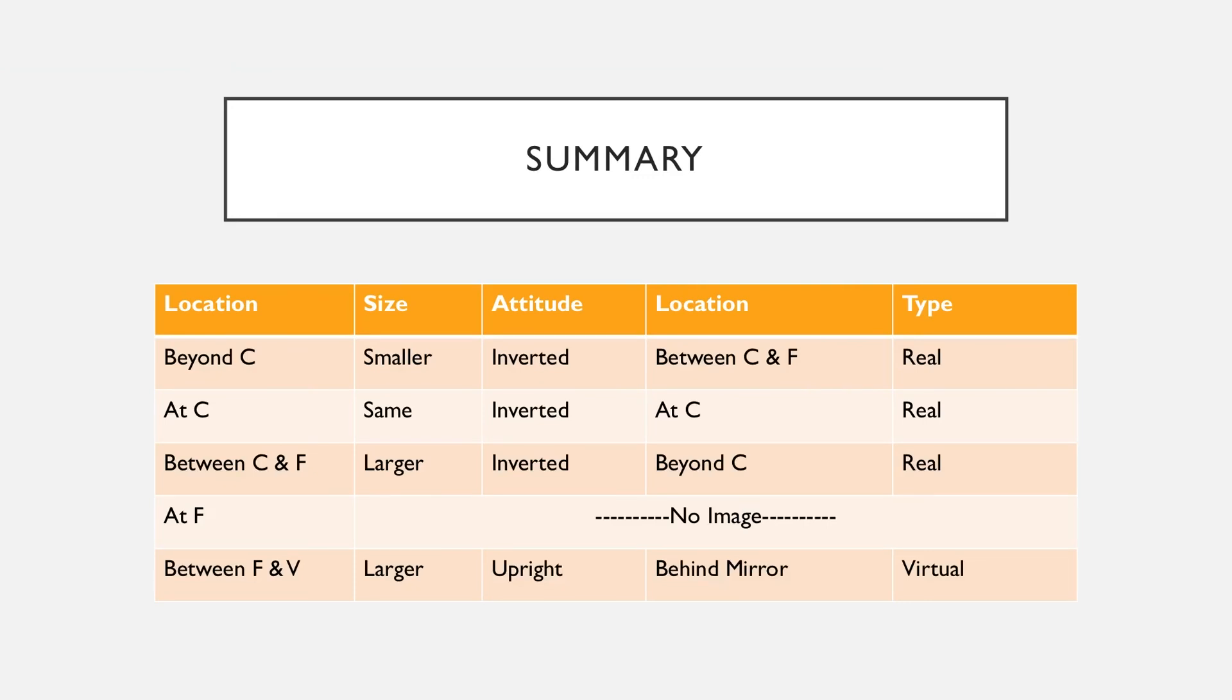Here's a summary of all five of the different scenarios that we've talked about and what their different SALT tables look like. You don't necessarily have to memorize this because it's really easy to figure them out as you've seen. You can just quickly draw the image, figure out where it is, and then you can fill out size, attitude, location, and type based on what you've drawn in your picture.